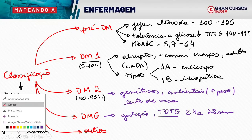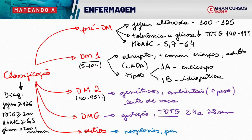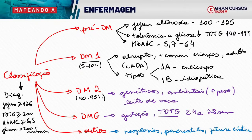Outros tipos de diabetes incluem o que já demos como exemplo: neoplasias e tumores pressionando o pâncreas, lesionando as células beta; inflamações pancreáticas como pancreatite; fibrose cística; síndromes; e várias outras causas externas endócrinas relacionadas.